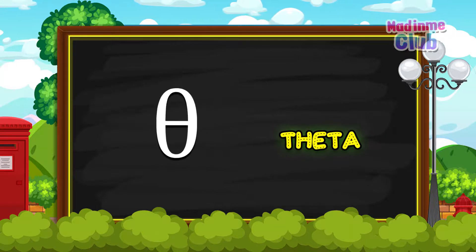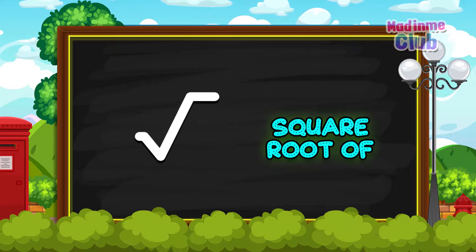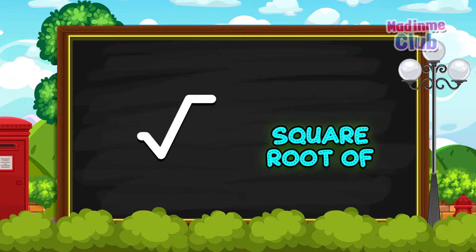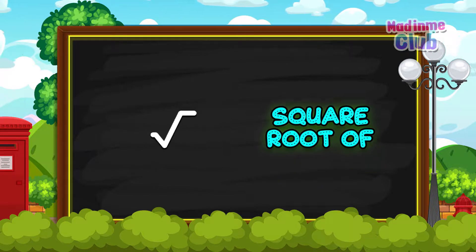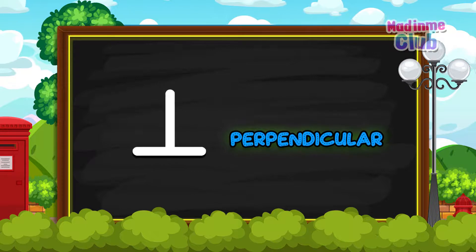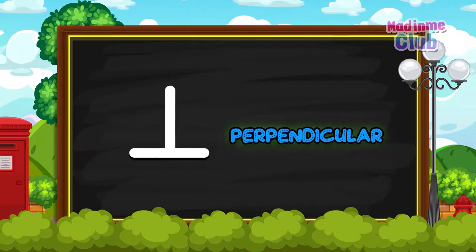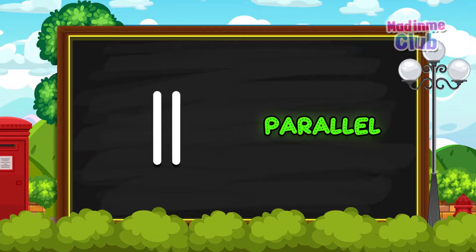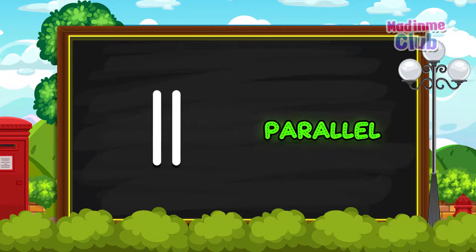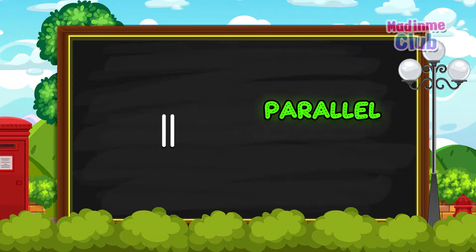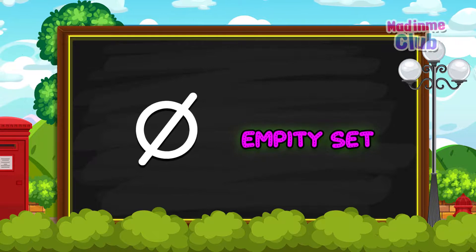Theta. Oh, McDonald's had a farm, E-I-E-I-O. Square root of. Perpendicular. Oh, McDonald's had a farm. Parallel — E-I-E-I-O. And on his farm he had some sheep.